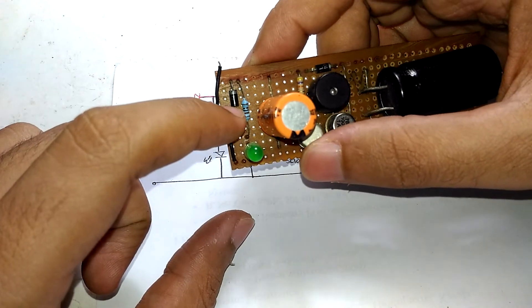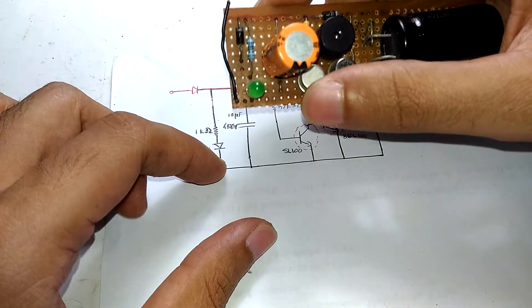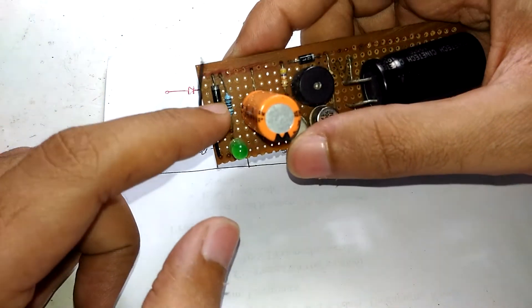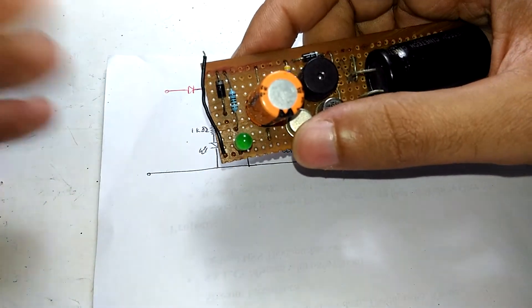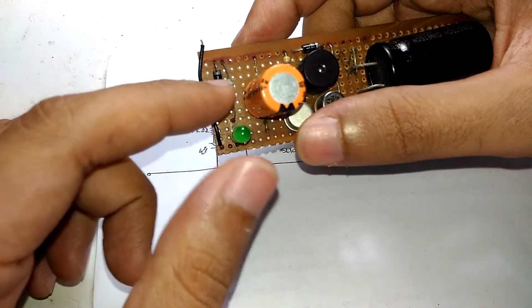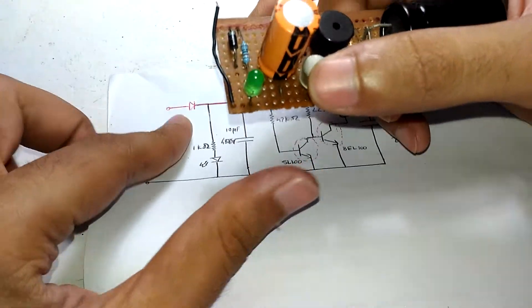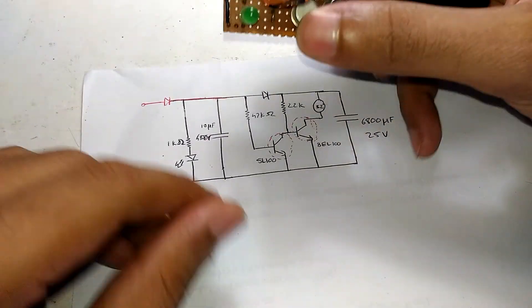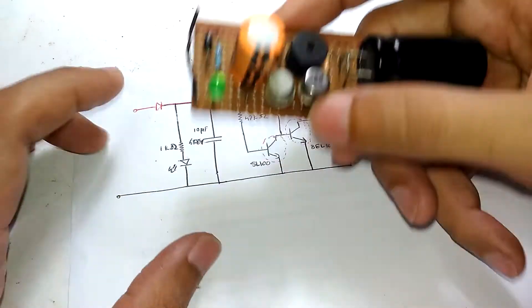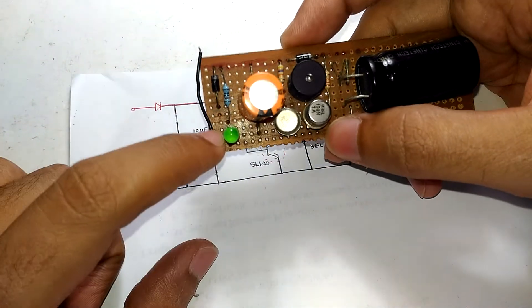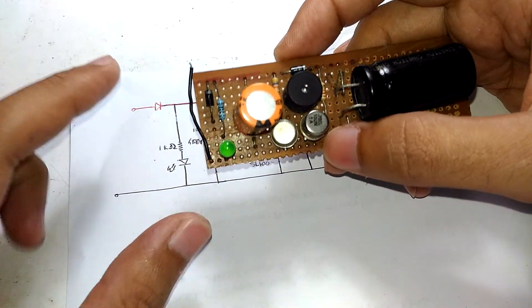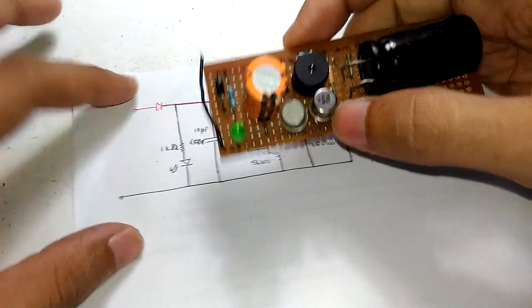It has a diode right here that rectifies it. I used this for polarity protection, but it doubles as a rectifier if you use a transformer. Right after that diode, there's an LED to indicate the presence of AC mains input.